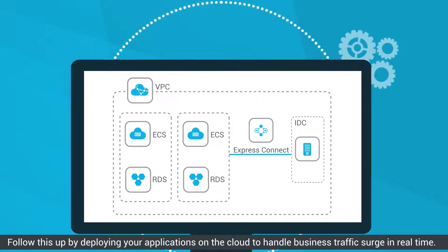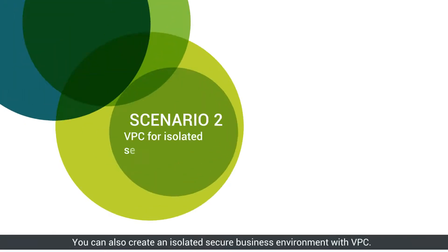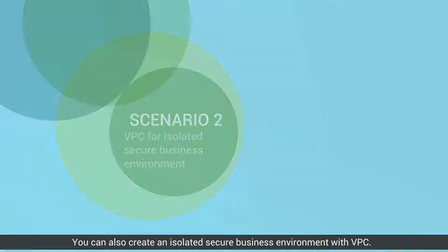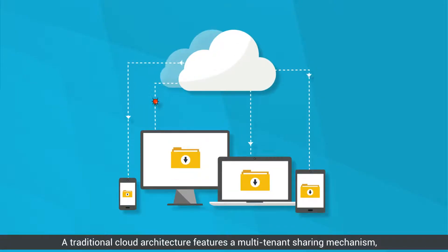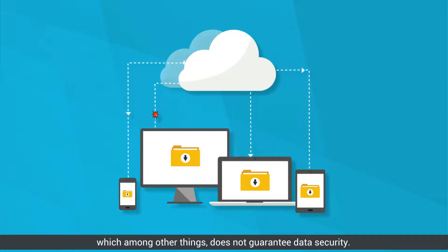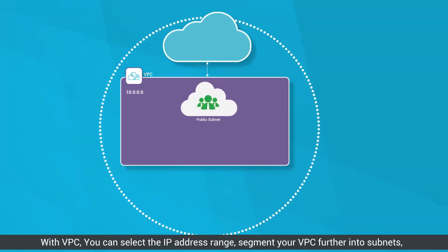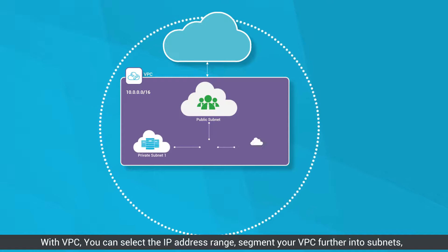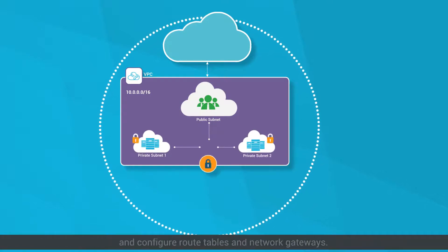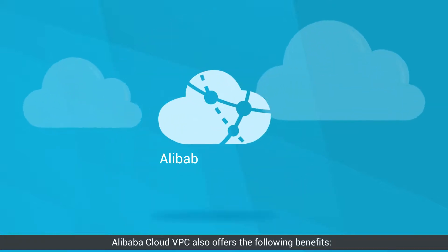Follow this up by deploying your applications on the cloud to handle business traffic surges in real time. Scenario two: you can also create an isolated, secure business environment with VPC. A traditional cloud architecture features a multi-tenant sharing mechanism which, among other things, does not guarantee data security. With VPC, you can select the IP address range and segment your VPC further into subnets.